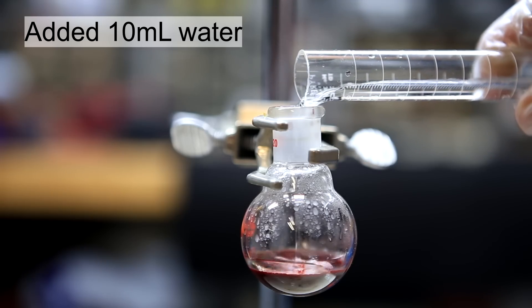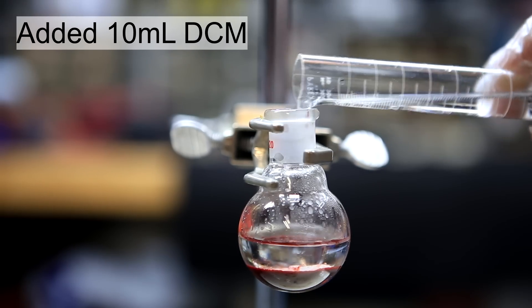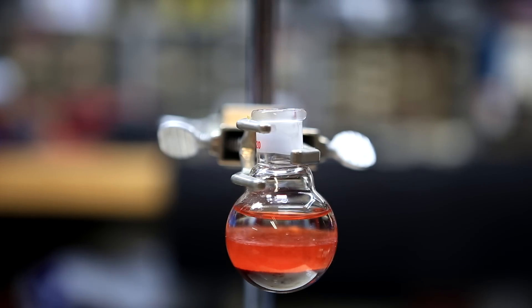Once it had cooled, 10 ml of distilled water was added. This was followed by 10 ml of dichloromethane. After the addition of both the water and the dichloromethane, we have an interesting 3 layered mixture.